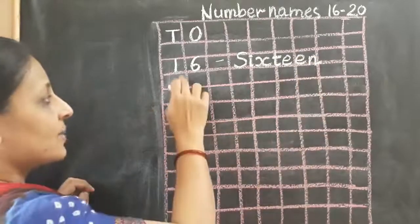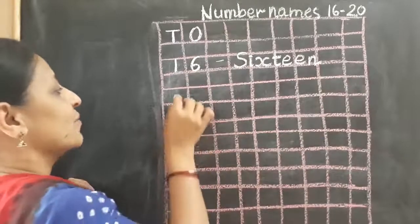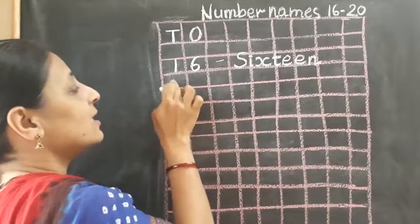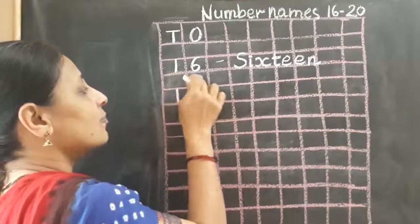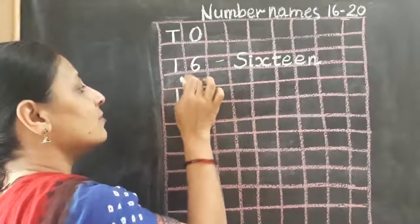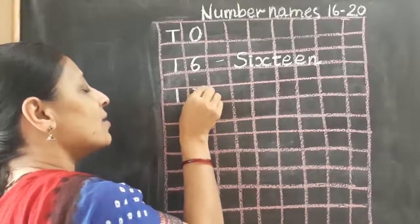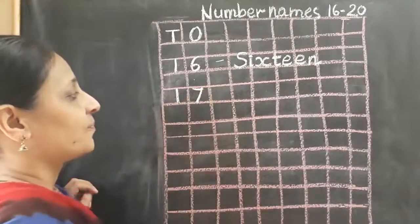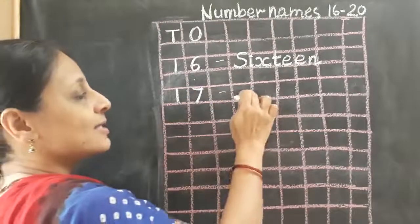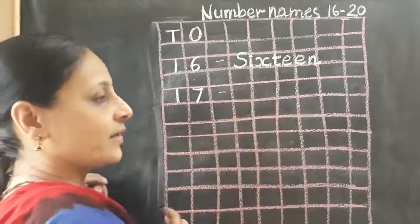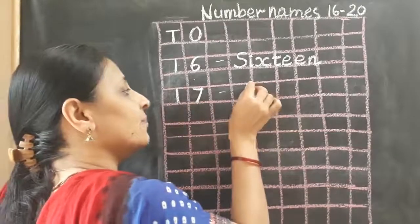Now, what comes after 16? Yes, 17. So I will leave one box between numbers and write 17. Now I will write the spelling, the number name of 17.